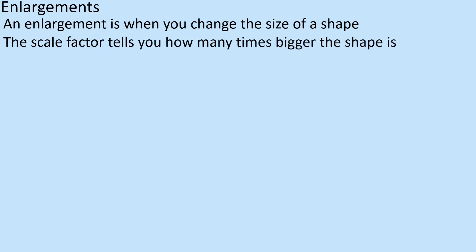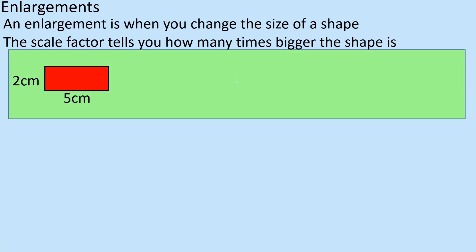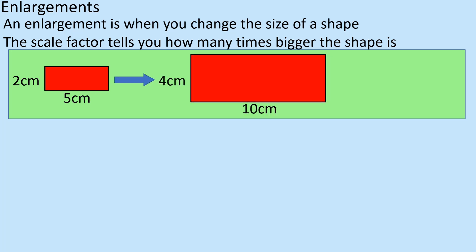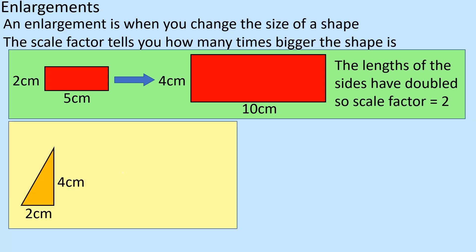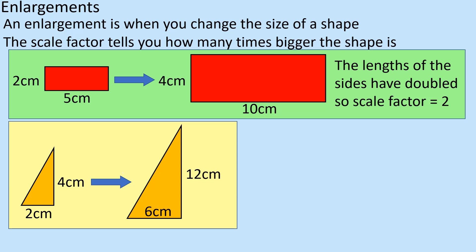The scale factor tells you how much it gets bigger or smaller by. Looking at this particular shape with dimensions two and five, if I move it to this larger shape, you can see it's got bigger. I'm looking at the dimensions to find out how much it's enlarged by — this is about multiplying, not adding. What's happened to two to four, or five to ten? They've doubled, so the scale factor is two. Similarly, if a shape goes from two to six and four to twelve, the numbers have tripled, so that's a scale factor of three.